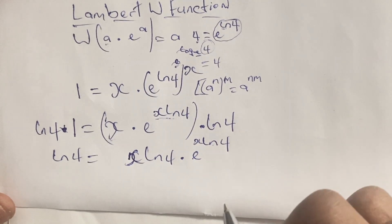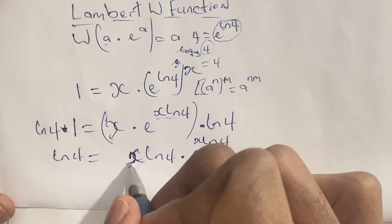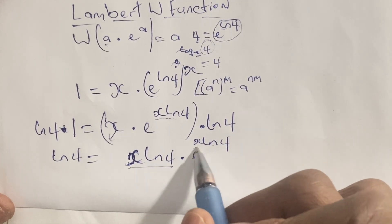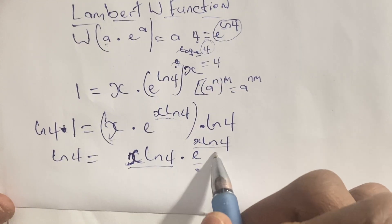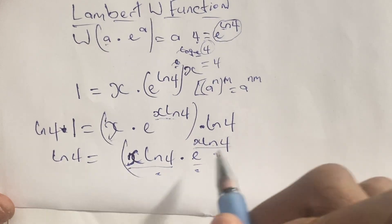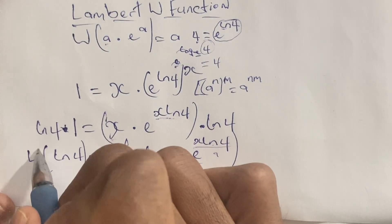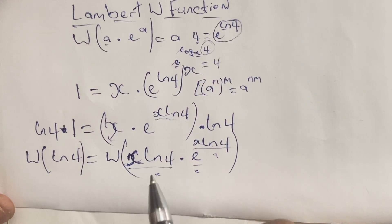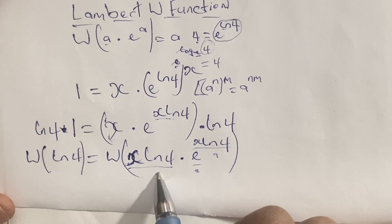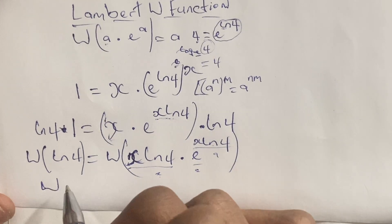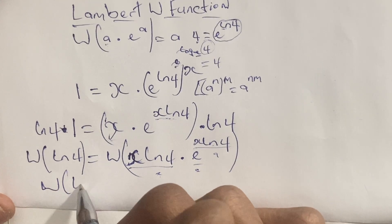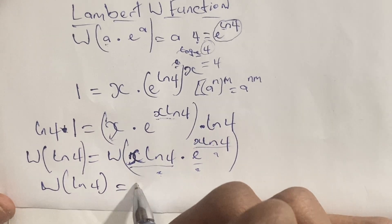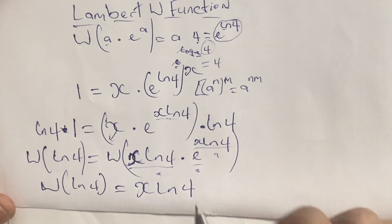Now looking at our expression, we have x·ln 4 times e to the power of x·ln 4. This means we have the same value in the power and in the base, giving us a times e to the power of a form. So if we apply the W function to this equation, we have W of ln 4 applied to the expression a times e to the power of a. Applying the W function to that expression gives us the value of a, so we have W of ln 4 is equal to a, which is x·ln 4.